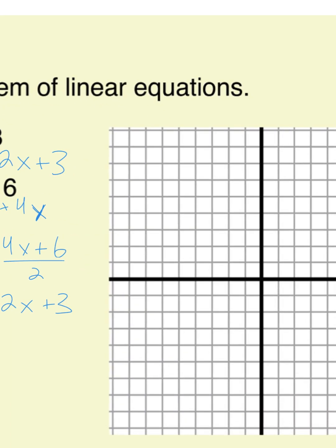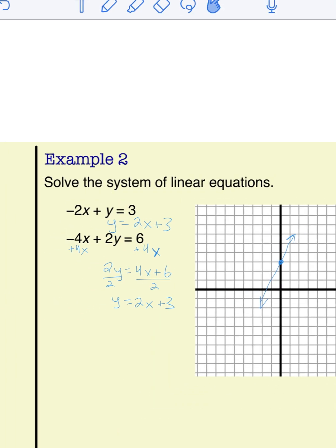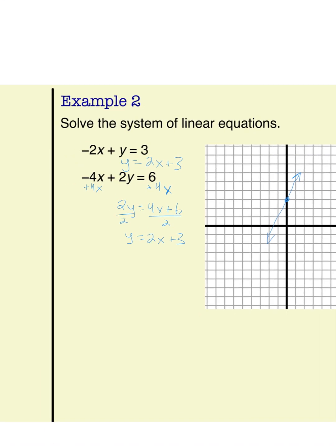The y-intercept is 3 and the slope is 2 for both equations. They're going to be the same line, which means they intersect at every single point, which means they have infinitely many solutions.